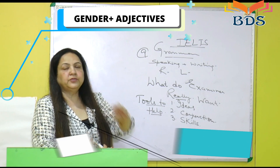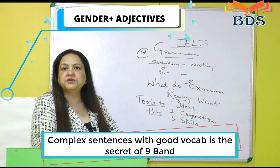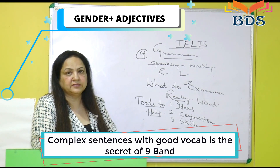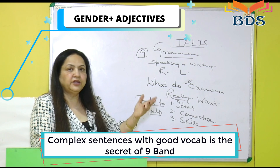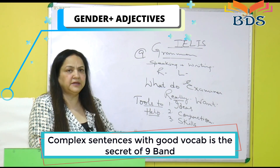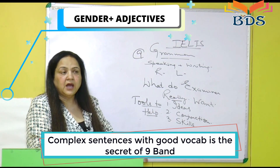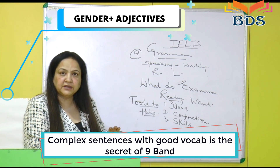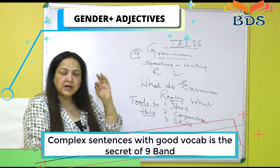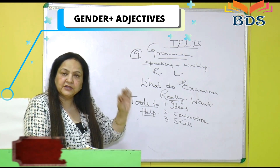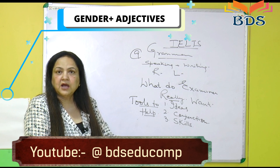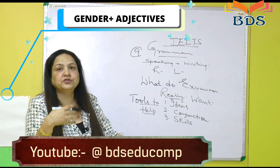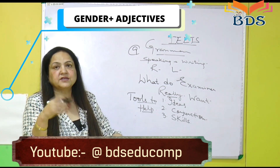Suppose the card says, 'Talk about a person you admire from your family.' You admire your father, mother — anybody. Ab jo bhi karo — mother kar rahe ho to arrow dal ke 'she' likh lo, agar father kar rahe ho to 'he' likh lo. Then make sentences out of it.